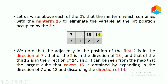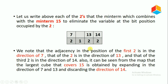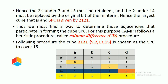From the K-map, the largest cube covering minterm 15 is obtained by expanding in the direction of 7 and 13, and discarding the direction of 14. By replacing that third 2 with 1, we get the cube (2, 1, 2, 1). This is the selective prime cube (2, 1, 2, 1), which covers the minterms 5, 7, 13, and 15. This selective prime cube covers minterm 15.